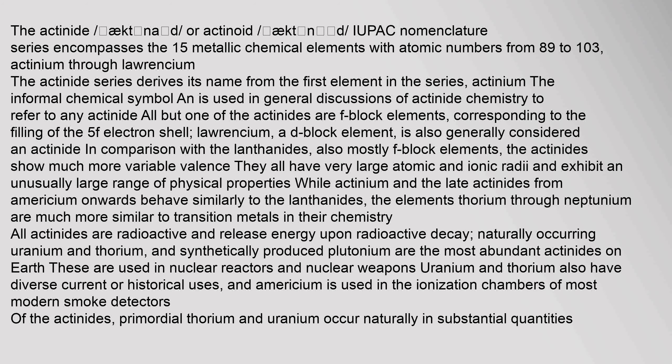All actinides are radioactive and release energy upon radioactive decay. Naturally occurring uranium and thorium, and synthetically produced plutonium are the most abundant actinides on Earth. These are used in nuclear reactors and nuclear weapons. Uranium and thorium also have diverse current or historical uses, and americium is used in the ionization chambers of most modern smoke detectors.